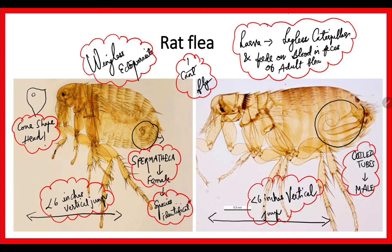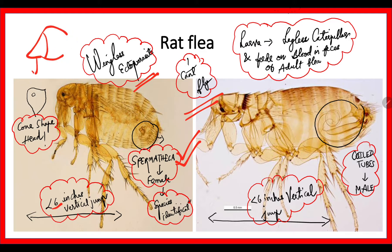Next is rat flea — it is again a wingless ectoparasite and cannot fly because it has no wings. Based on the spermathecae present in females, it is used to differentiate species. Since it cannot fly, it can only jump — less than six inches. To identify rat flea, remember that a rat has a face like a cone, and similarly rat flea also has a cone-shaped head. In males there is a coiled tube in the abdomen; in females there is the spermatheca. The larva of rat flea feeds on the feces of the adult flea, which contains blood.